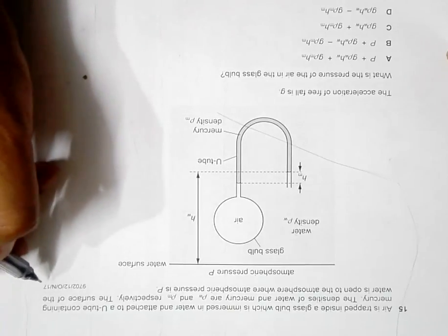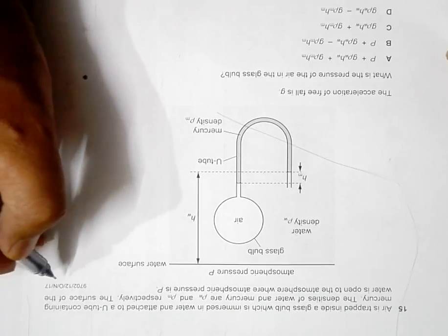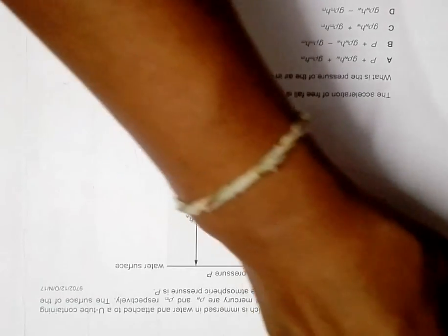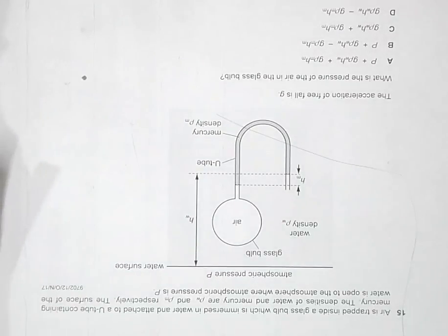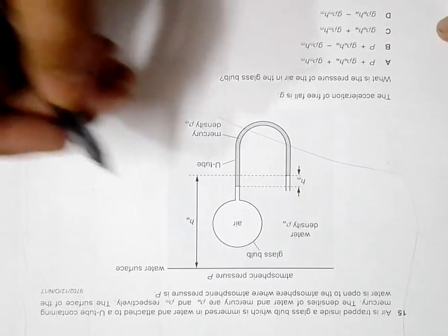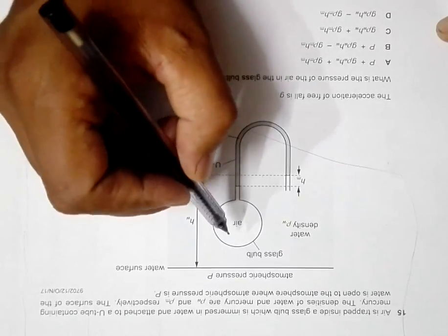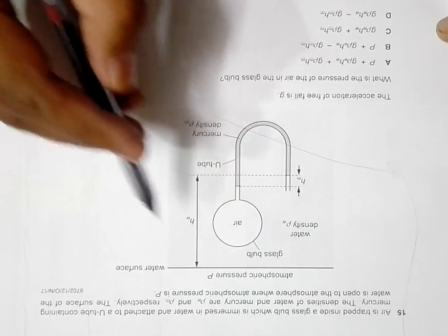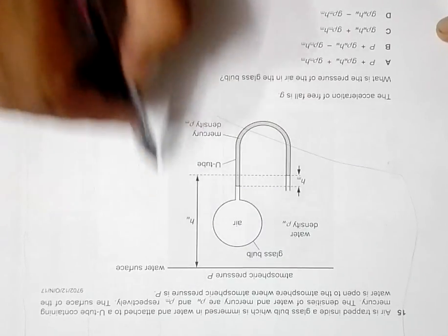This is the question of 2017 October November paper 12, question number 15. This question says that air is trapped inside a glass bulb which is shown here, which is immersed in water.